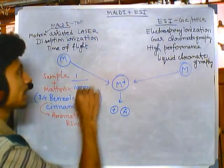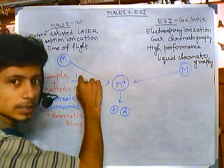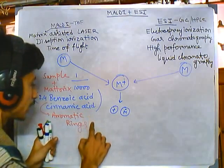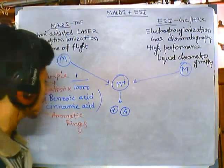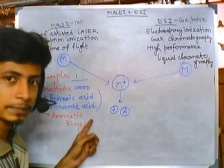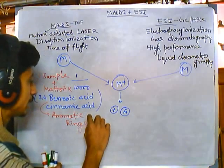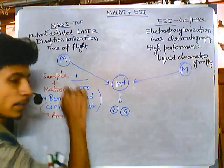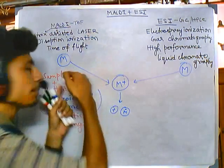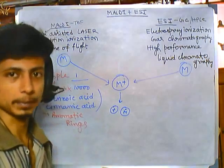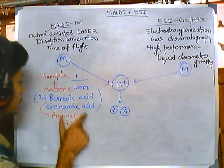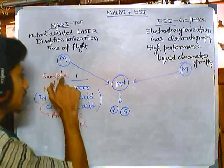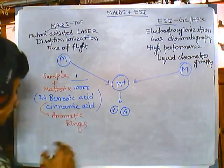If you use much more sample and less matrix, the laser is going to hamper our sample, and we don't want that. We need the matrix components because they contain the aromatic rings. When you heat them with laser, they get the energy from the laser and transfer this laser energy to the sample. We don't directly hit the sample with laser because that would destroy our sample. So we hit the laser onto the matrix components, and the matrix components get the energy from the laser and provide it to the sample.